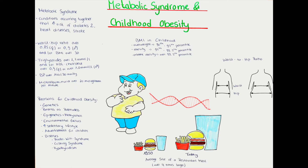According to the WHO, a patient must have elevated blood glucose levels at fasting state, or an impaired glucose tolerance, or diabetes mellitus, together with two of the following criteria. First, a waist-hip ratio over 0.85 for women or over 0.9 for men and/or a BMI over 30. Second, triglycerides over 1.7 millimole per liter and/or HDL cholesterol over 0.9 for women or over 1 millimole per liter for men.